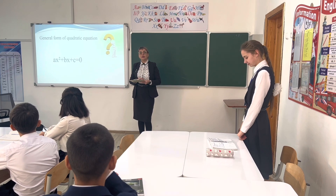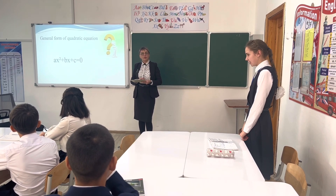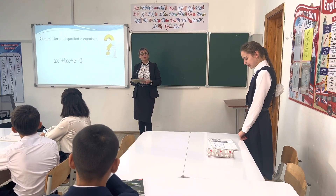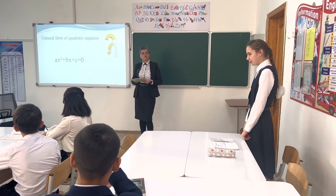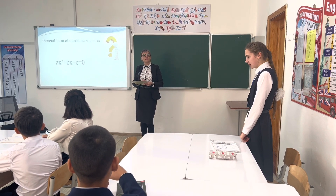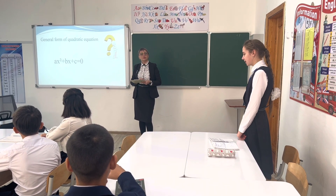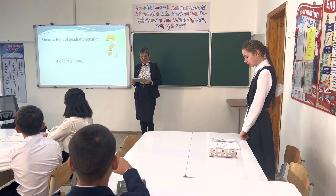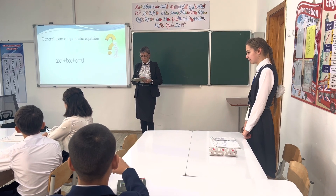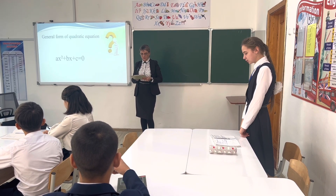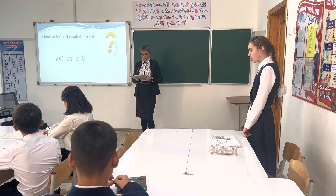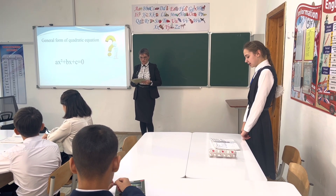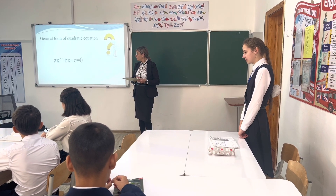Next, we have to find the discriminant. The formula to calculate the discriminant looks like: D equals B² minus 4AC. If the discriminant is more than zero, we have two solutions. If the discriminant equals zero, we have only one solution. And if the discriminant is negative, we have zero solutions.